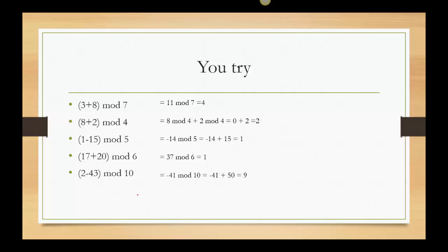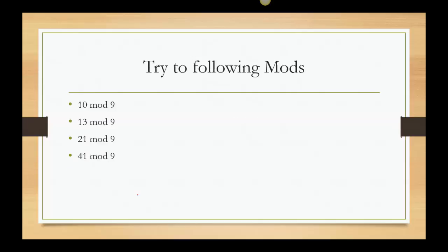Okay. 17 plus 20. Neither one of those are multiples of 6. So I'm just going to go ahead and add those together. 17 and 20 gave me 37. When I'm thinking about 37 with mod 6, I think, well, 6 times 6 is 36. So 37 minus 36 gives me 1. The last one. 2 minus 43 gives me negative 41. So here's a negative again. I think I need to add a multiple of the mod and my mod is 10. So I'm going to add negative 41. Let's add 50. Negative 41 and 50 gives me 9.